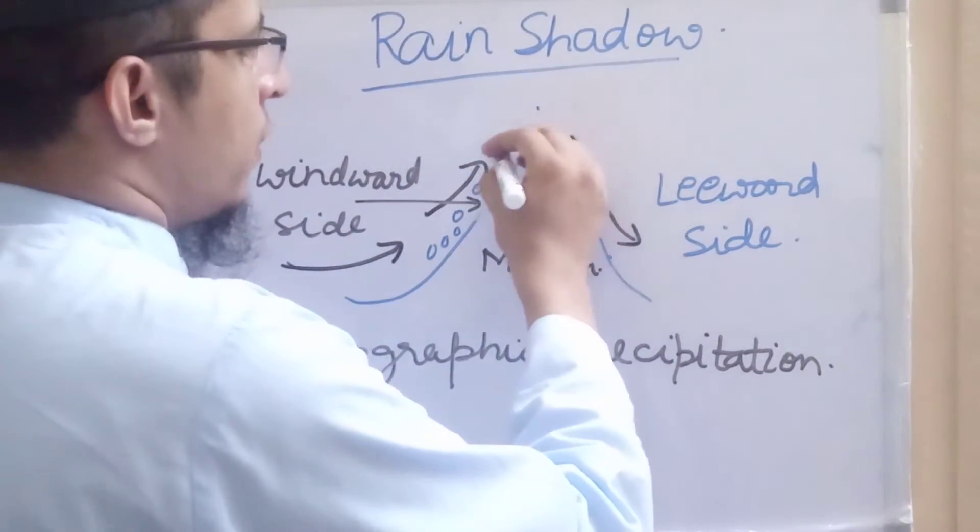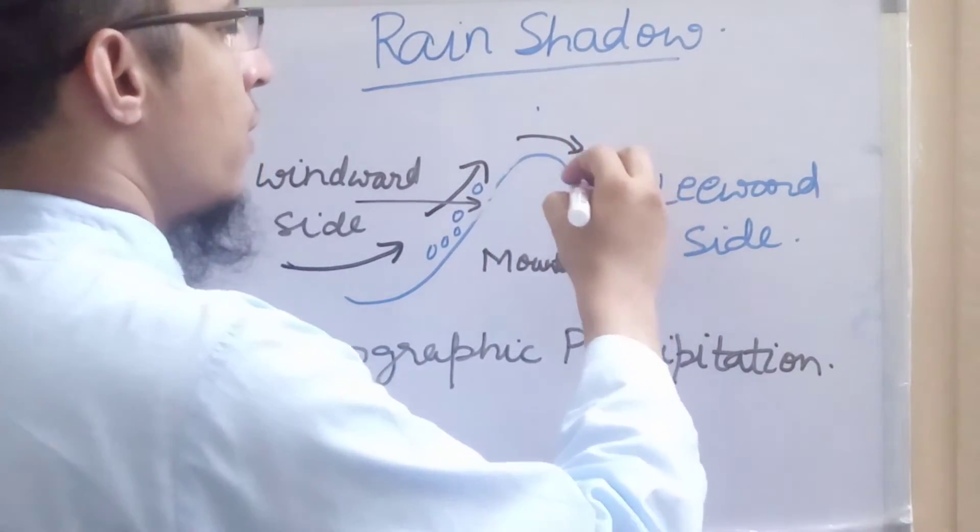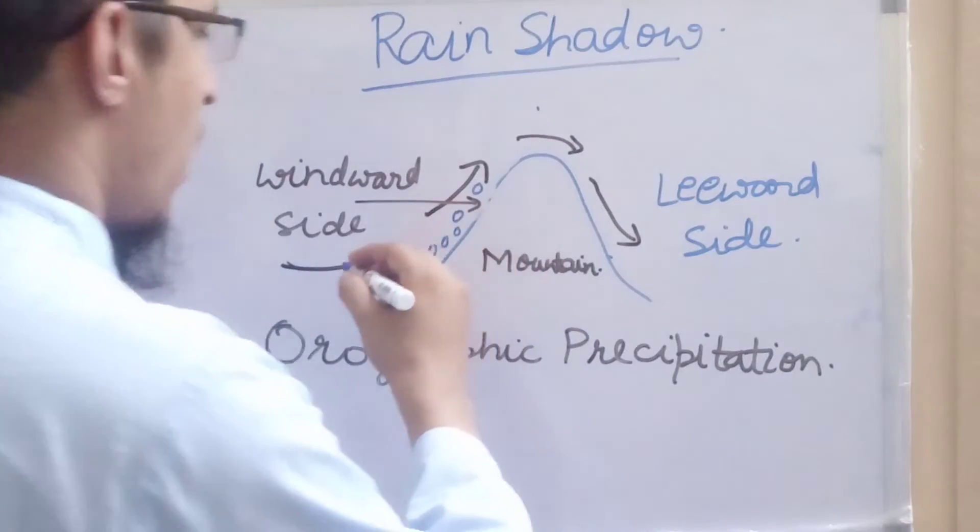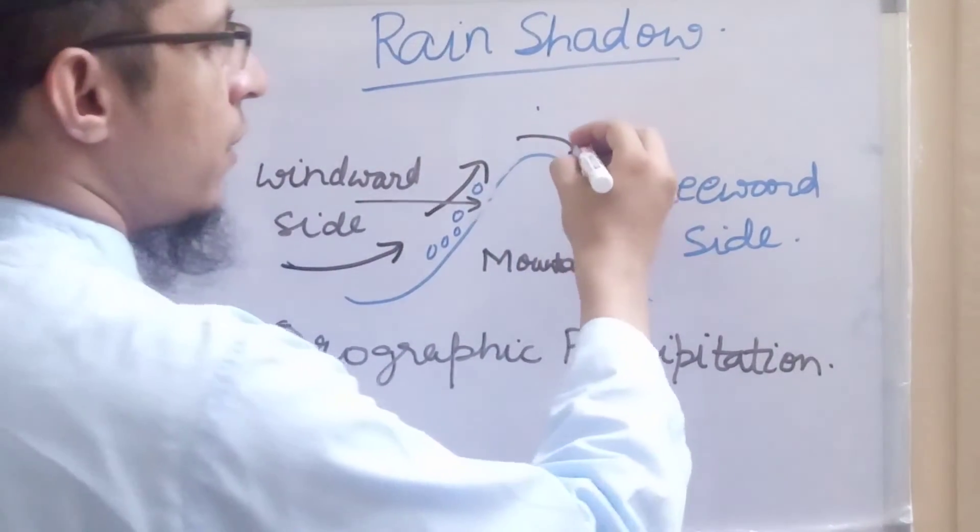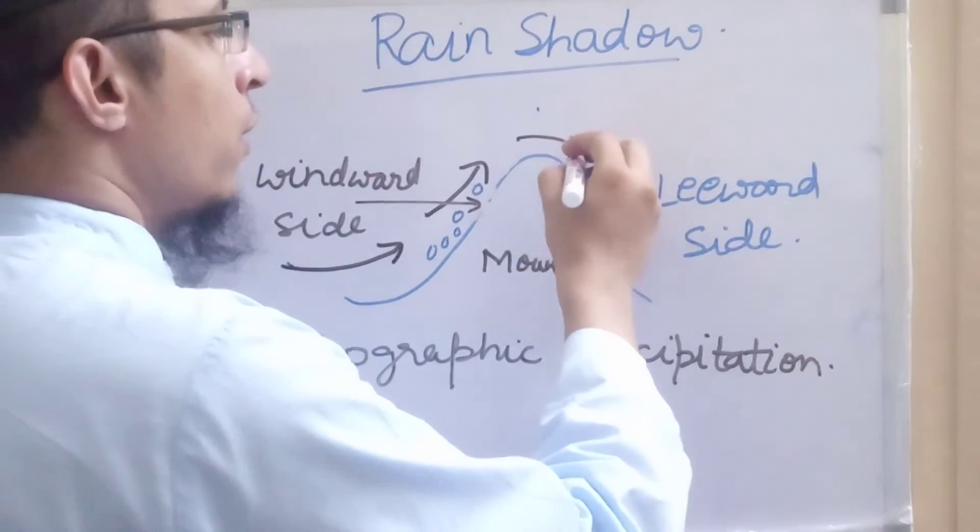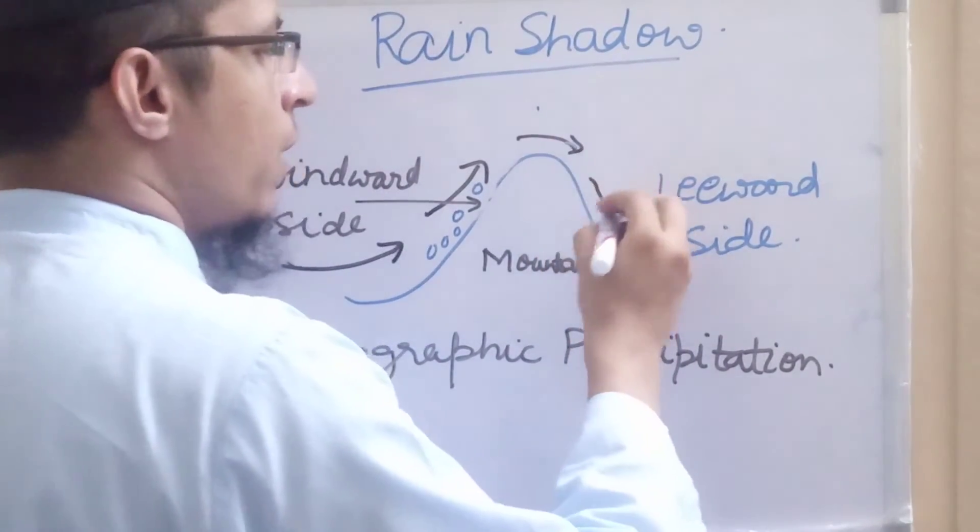But when the wind crosses this mountain, it moves in the downward direction. Now we know that with height, temperature decreases, and as we come down, temperature again starts increasing. So here, the condensation process will be slower.